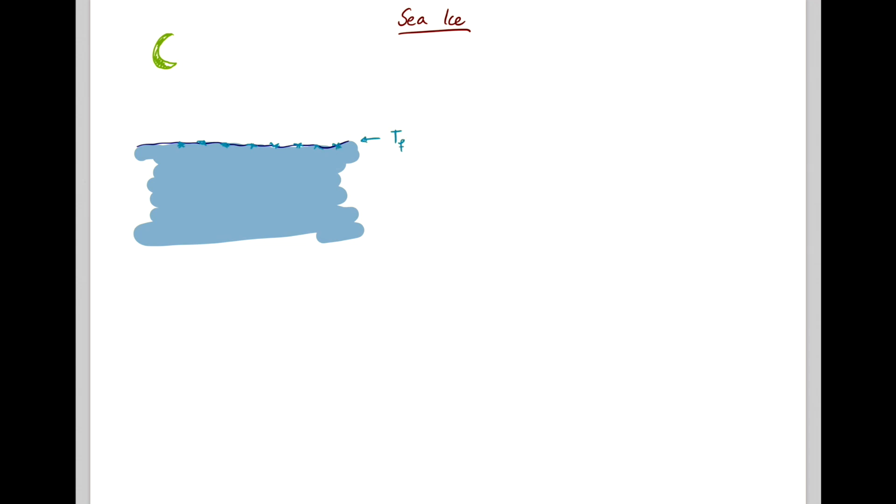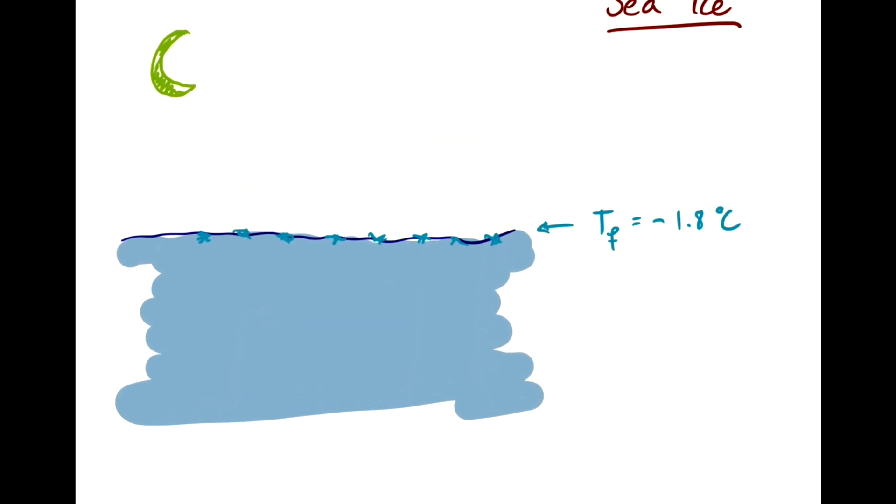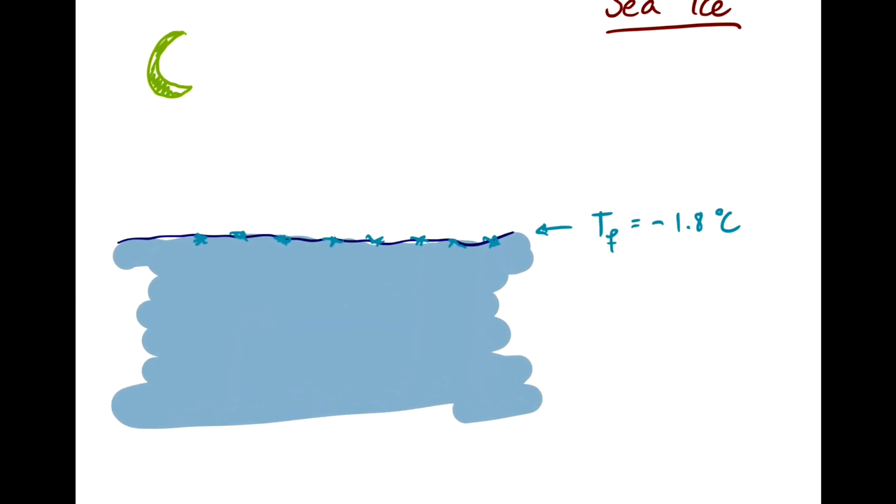And the freezing point for salt water is about minus 1.8 degrees Celsius. So because there's salt in the ocean, the freezing point is slightly depressed.